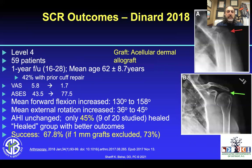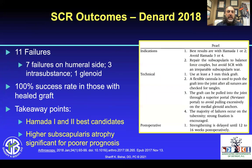In Denard's group 2018 — a level four study, 59 patients, acellular dermal allograft at 3 millimeters — VAS scores came down and ASES scores went up. Interestingly, the acromial-humeral index didn't change very much in 45 patients in the healed group. Many that failed did so on the humeral side. In those with success, he had about 67.8% healing. In his 11 failures, 7 were on the humeral side, one intersubstance, and one glenoid. The takeaway: patients with Hamada 1 and 2 are best candidates; higher subscapular atrophy had poor prognosis.